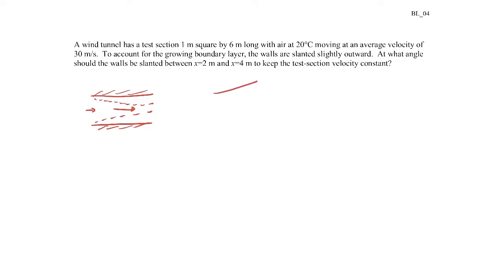So in order to compensate for that, what we want to do is tilt the walls outward so that the boundary layer growth keeps the test section cross sectional area nearly constant. We want to find out what this angle theta is. Now to find that, it'll be the displacement thickness that we care about because when dealing with mass flow rates, it's really the displacement thickness that comes into play.